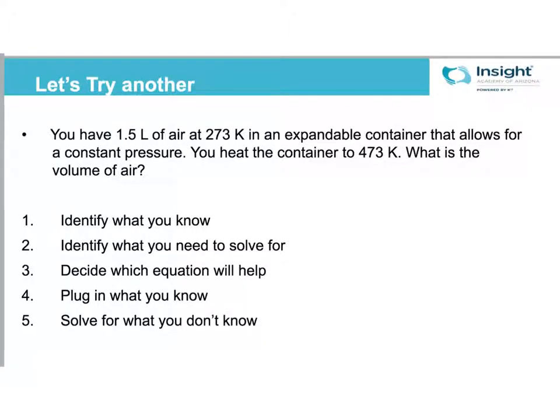So let's practice this with a few more. Next one is you have 1.5 liters of air at 273 Kelvin in an expandable container that allows a constant pressure. You heat the container to 473 Kelvin. What is the volume of air? So I know 1.5 liters, I know 273 Kelvin, I know 473 Kelvin. So looking over the problem, the 1.5 and the 273 are related to each other. That's what I start with. So liters is volume, Kelvin is a temperature unit. So there's my V1 and T1. And then I'm going to change the temperature. So my T2 is the 473. And then what I need to solve for is what's the volume of air? So V2 is my question mark.